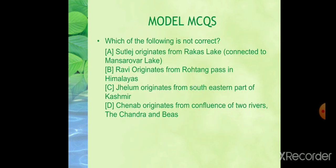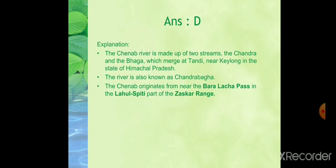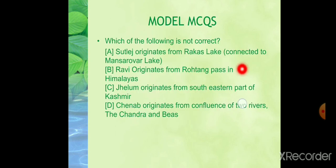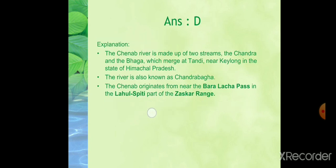Now we will go through a few MCQs from this topic. Question 1: Which of the following is not correct? (A) Sutlej originates from Rakas Lake connected to Mansarovar Lake; (B) Ravi originates from Rohtang Pass in the Himalayas; (C) Jhelum originates from the eastern part of Kashmir; (D) Chenab originates from the confluence of two rivers, Chandra and Beas. The answer is D, because the Chenab is made up of two streams — Chandra and Bhaga — not Chandra and Beas. The Chenab originates near the Bara Lacha Pass in the Zaskar range.